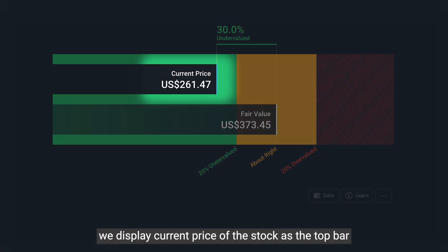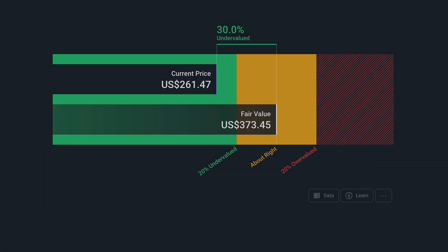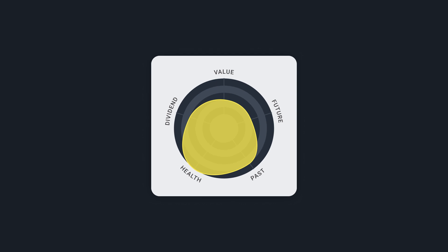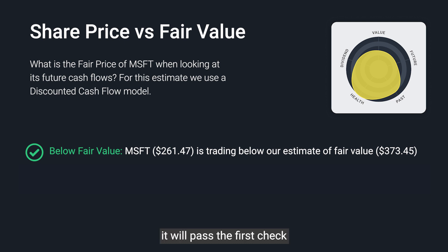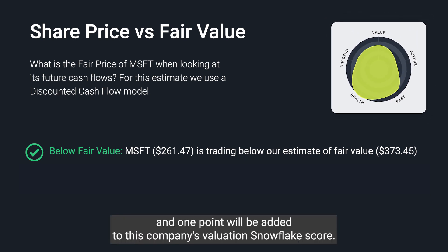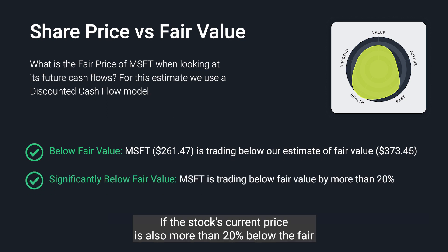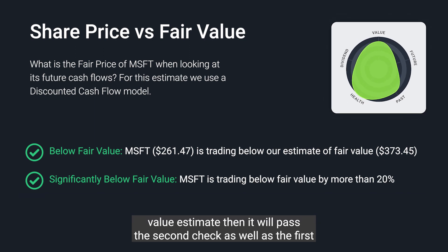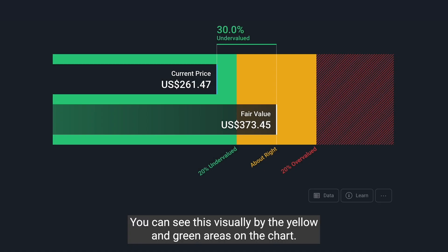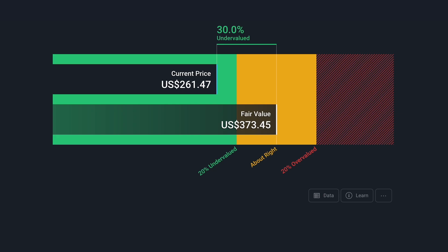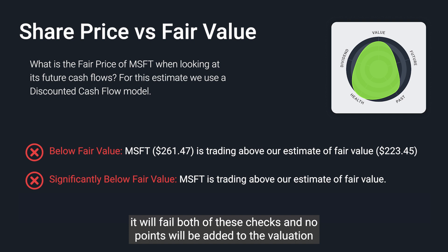In the chart, we display the current price of the stock as the top bar and compare it to the estimate of fair value, which is the bottom bar. We do two snowflake checks based on this section. Firstly, if the stock's current price is below the estimate of fair value, it will pass the first check and one point will be added to the valuation snowflake score. If the stock's current price is also more than 20% below the fair value estimate, it will pass both checks and add a second point to the valuation snowflake. You can see this visually by the yellow and green areas on the chart. If the current stock price is above the estimate of fair value, it will fail both checks and no points will be added.